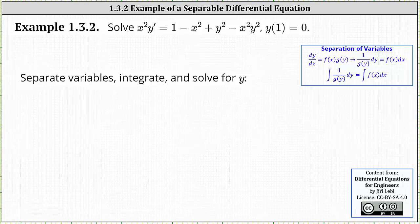We're going to solve the given initial value problem where the differential equation is x squared y prime equals one minus x squared plus y squared minus x squared y squared, with initial condition y of one equals zero.